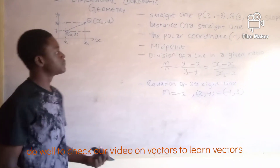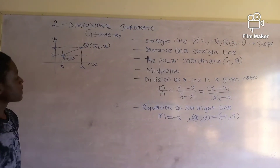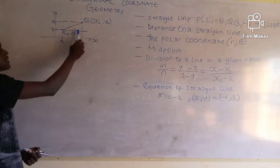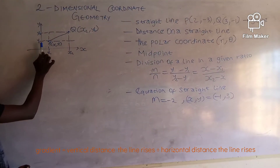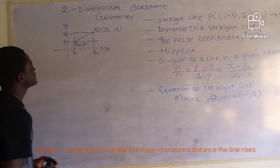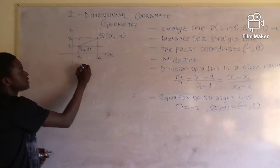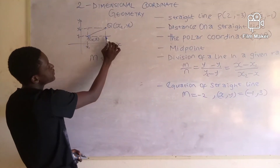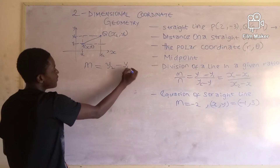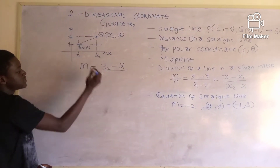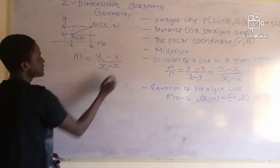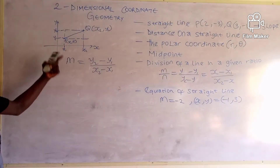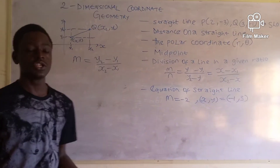One thing we can discuss about a straight line — as we talked about in our vectors video — is the gradient or slope. The slope is the vertical distance the line rises over the horizontal distance it travels. In 2D coordinate geometry, this is written as m = (y2 - y1) / (x2 - x1). This is the formula for solving the slope and gradient of a straight line.